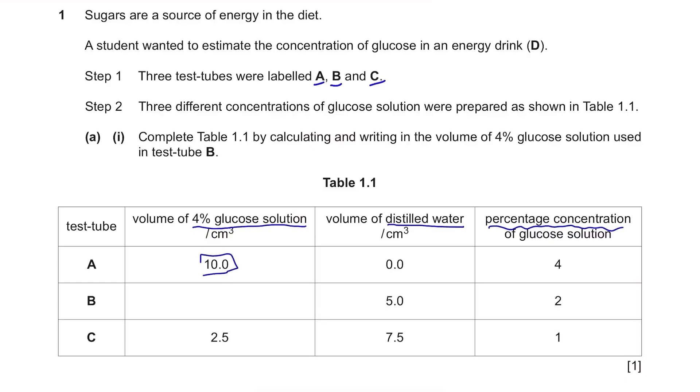For A, in 10 cm³ of 4% glucose solution, no water was added so the percentage remains 4%. For C, in 2.5 cm³ of 4% glucose solution, 7.5 cm³ of water was added. So now you have 10 cm³ of glucose solution with 2.5 cm³ of 4% glucose solution. As 2.5 cm³ is a quarter of 10 cm³, the percentage concentration will be a quarter as well, which is 1%. For B, we know the volume of distilled water and the percentage concentration which is 2%. 2% is half of 4%, meaning only half of the glucose solution is added. So the answer is 5 cm³.